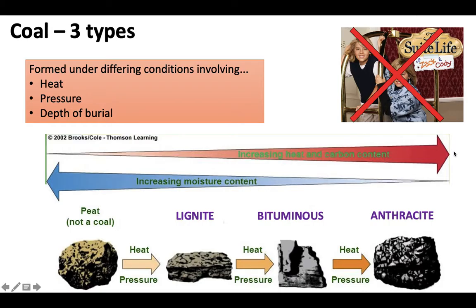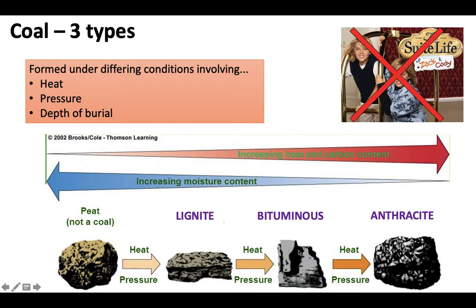Next is coal — and there are three types you need to know, forming under different conditions of heat, pressure, and depth underground. As organic matter is compressed under sediment and heated, it turns into peat first. With more heat and pressure, it converts into lignite, a flaky, impure coal. Continuing to add heat and pressure converts it to bituminous coal, and finally to anthracite, the purest form and cleanest burning. Anthracite is often used in indoor heating systems because it produces the least air pollution.